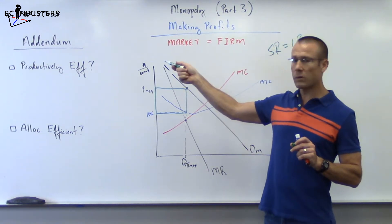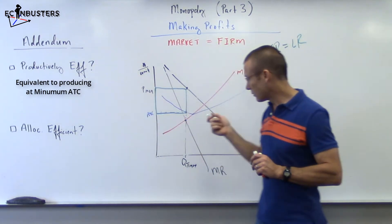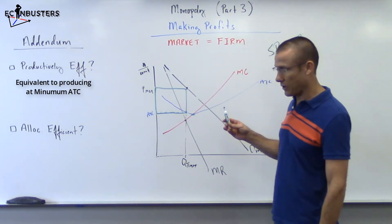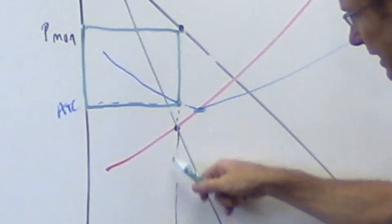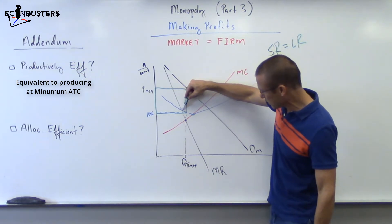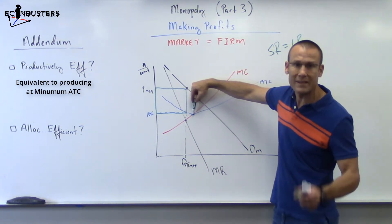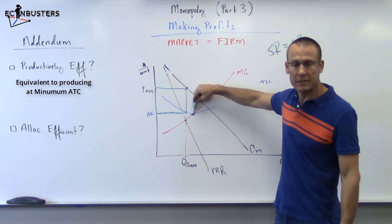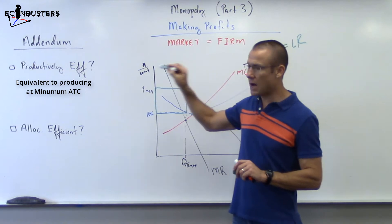The question is: are we producing at minimum ATC? Because we need to be producing at minimum ATC to be productively efficient. Well, minimum ATC is where ATC intersects MC. ATC is downward sloping all the way till it hits MC — that's the minimum ATC — and then it's upward sloping. We are not producing at minimum ATC. We are not productively efficient.